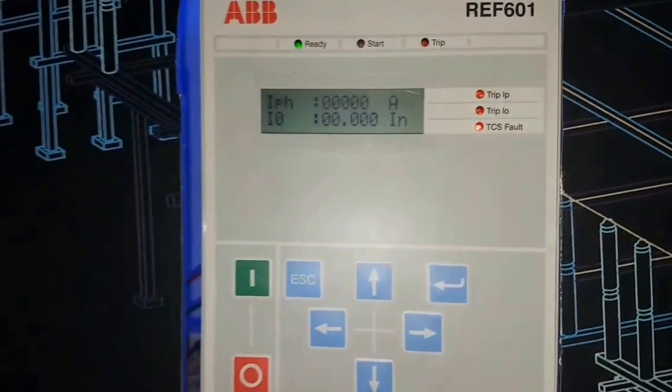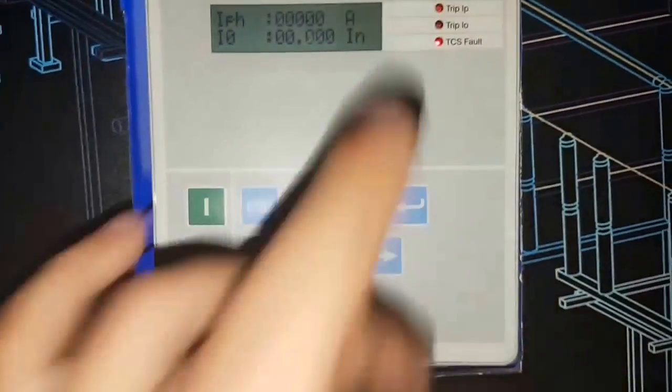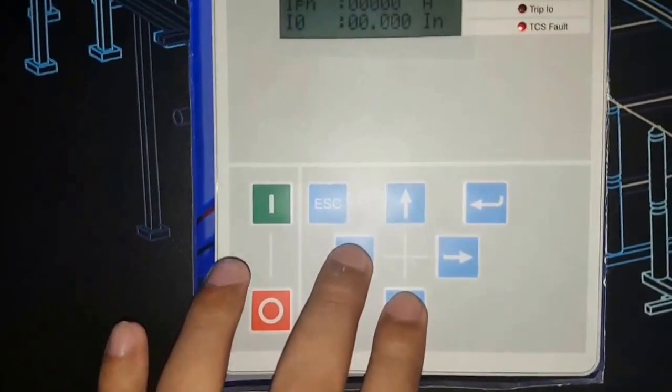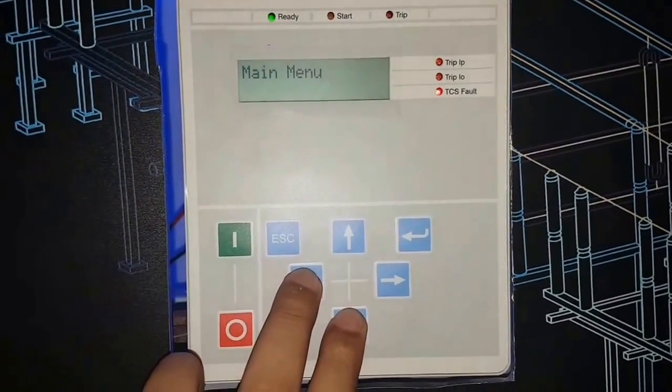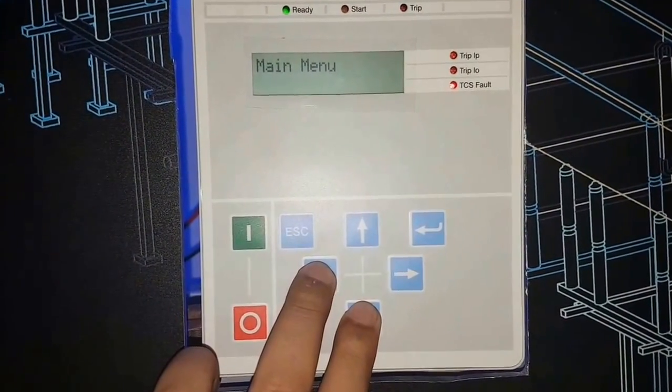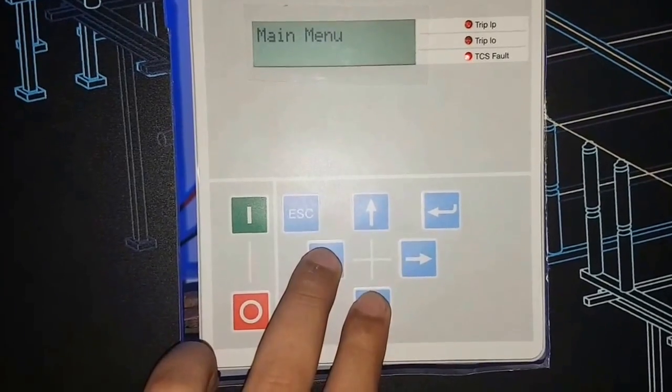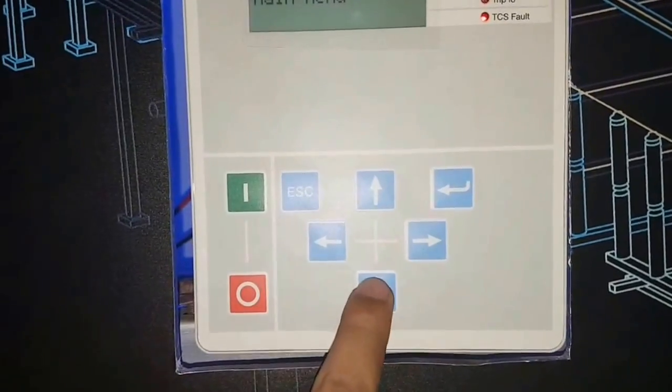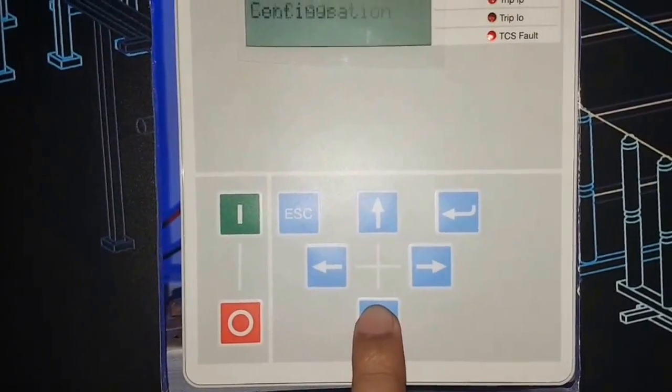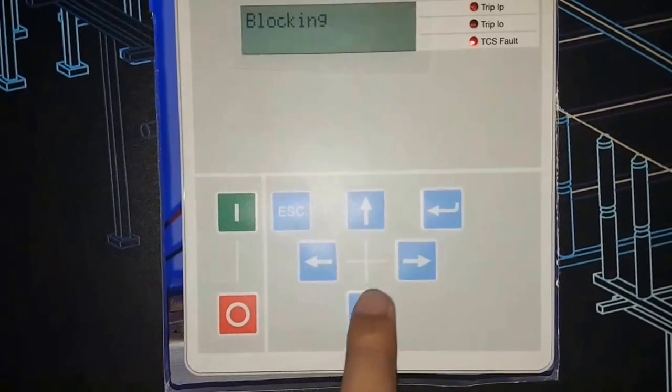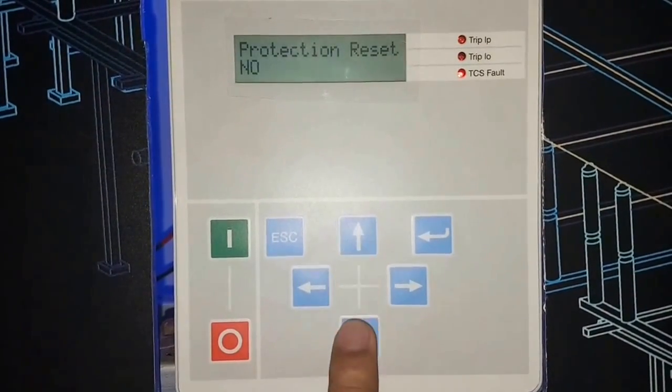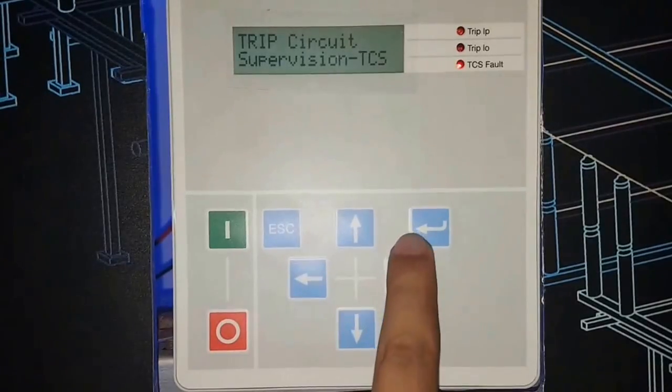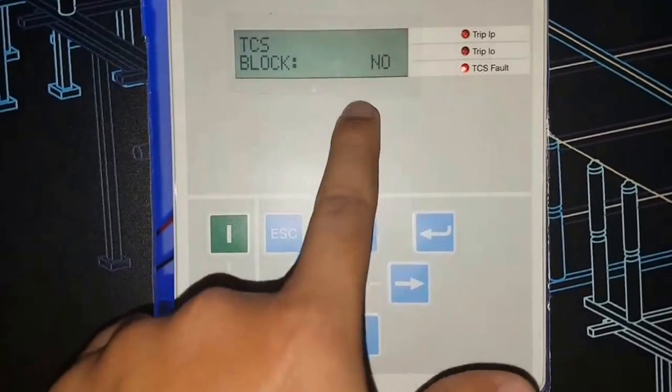First I have to use this button, hold this simultaneously, I mean together. Then you will go from main menu to configuration, then configuration to blocking P configuration TCS. Right button, this will change...